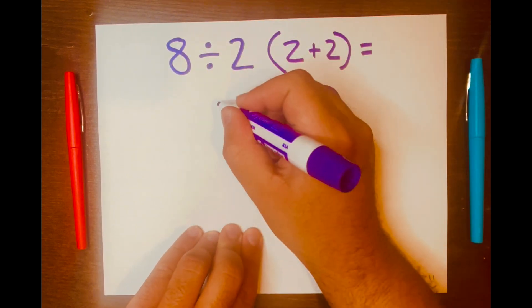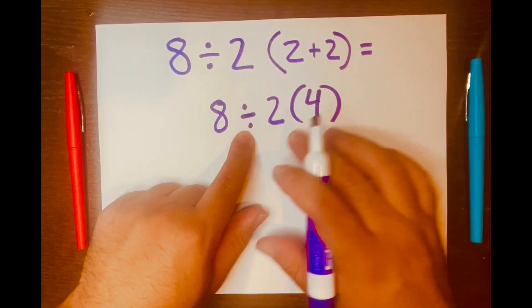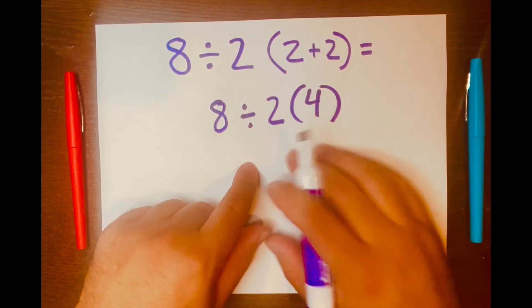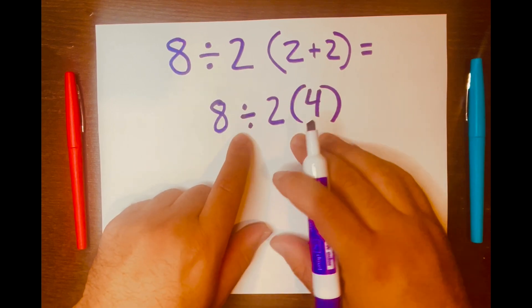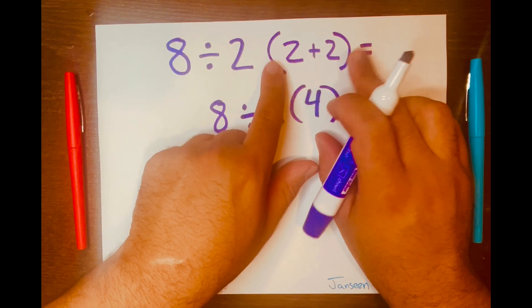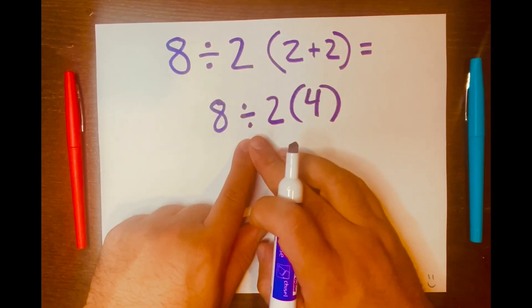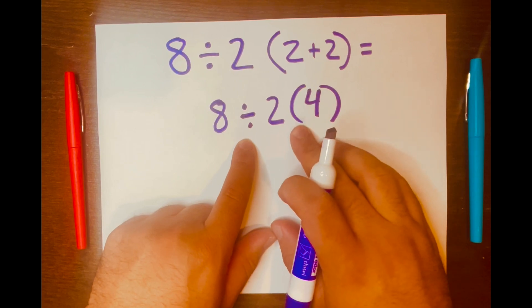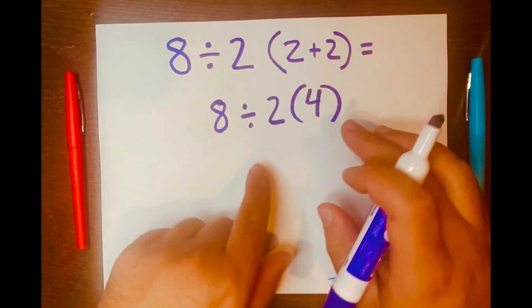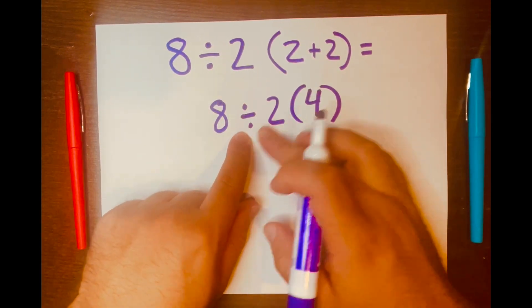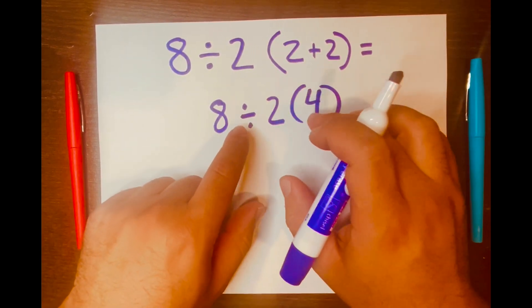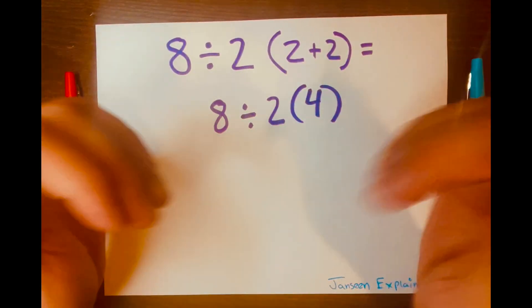Now according to PEMDAS, you read from left to right according to its levels. We started to our left because the parentheses is a higher level than division. Now we have division, multiplication, and both of these operations are within its level. So you can't go 'oh division is a higher level than multiplication or multiplication higher level than division.' No, these two operations are within its level. According to PEMDAS, you just read from left to right now.